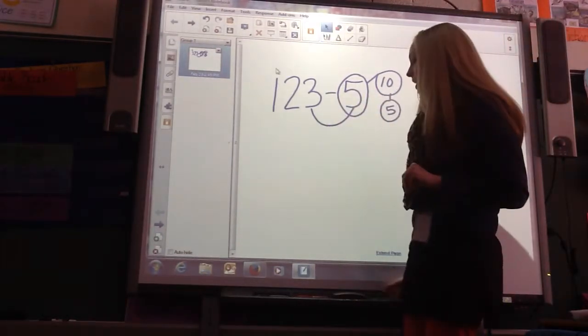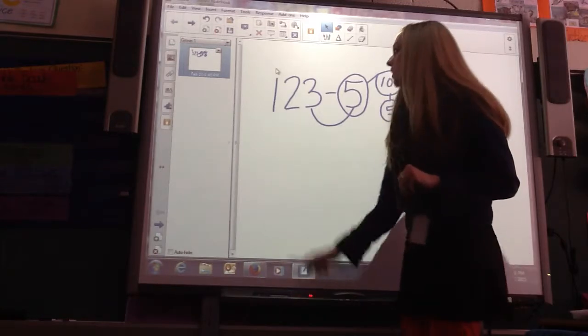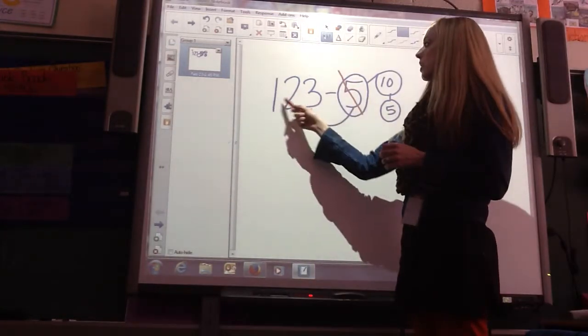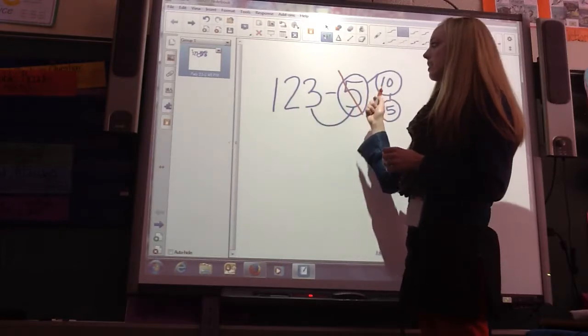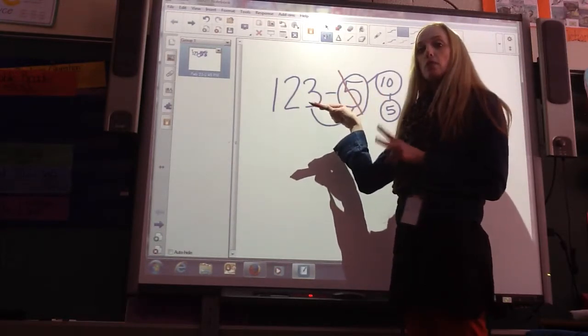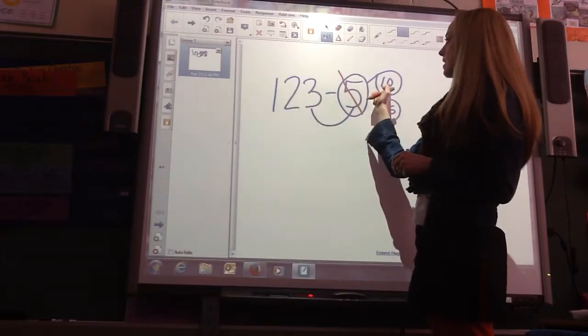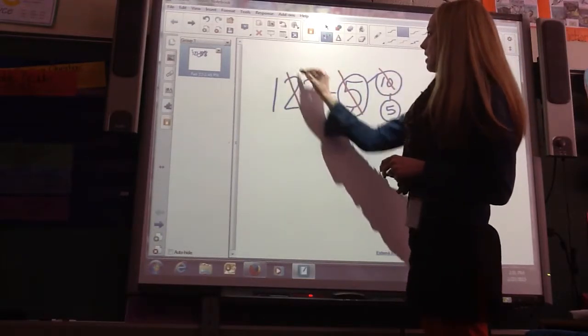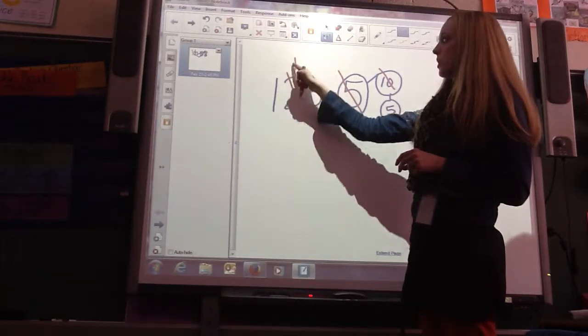So now I go through and I say, well, I was going to subtract 123 minus 5. Now I'm going to subtract 123 minus 10, just like in strategy number 2. So, 123 minus 10 is really just 20 minus 10. Take your 10 away. So now I'm left with 113.